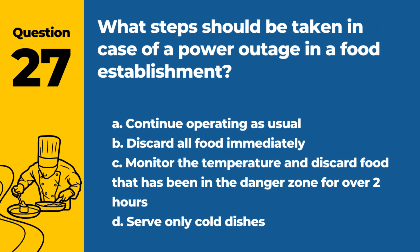Question 27. What steps should be taken in case of a power outage in a food establishment? A. Continue operating as usual. B. Discard all food immediately. C. Monitor the temperature and discard food that has been in the danger zone for over two hours. D. Serve only cold dishes. Answer: C. Monitor the temperature and discard food that has been in the danger zone for over two hours. In a power outage, monitor food temperature and discard any food in the danger zone — 40°F to 140°F, 4°C to 60°C — for over two hours.